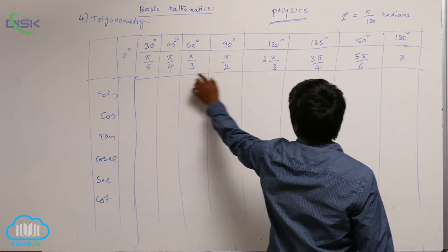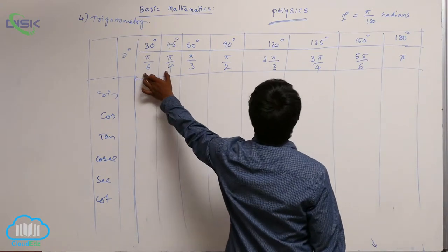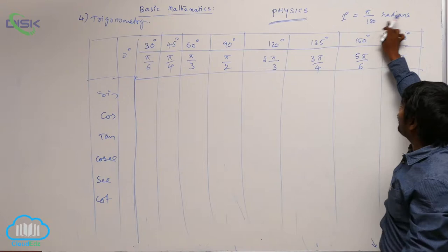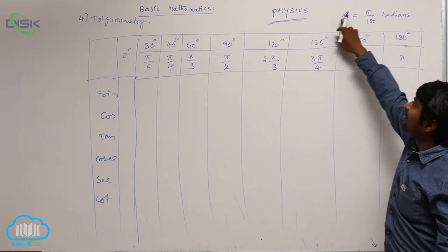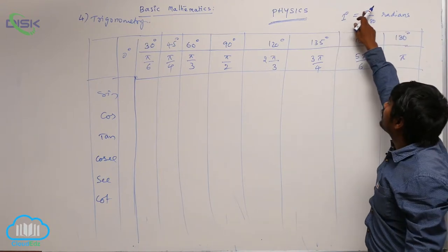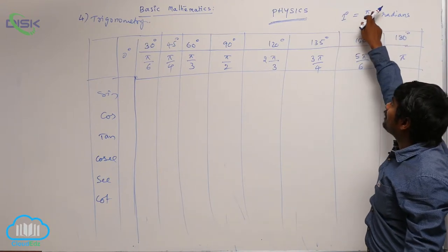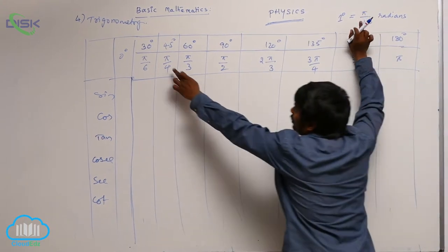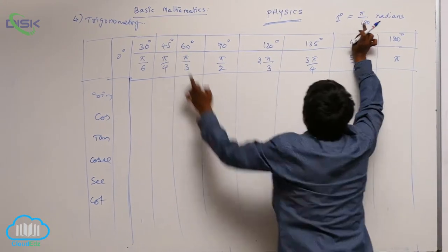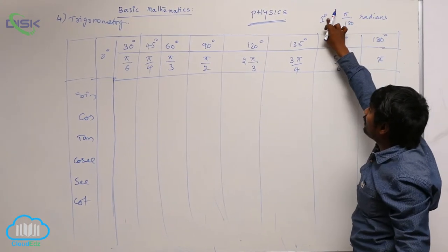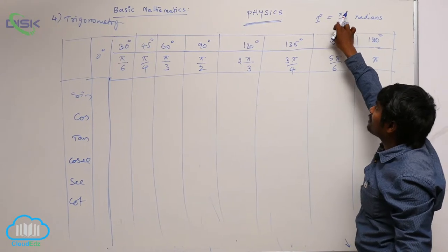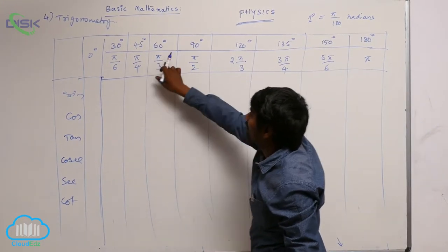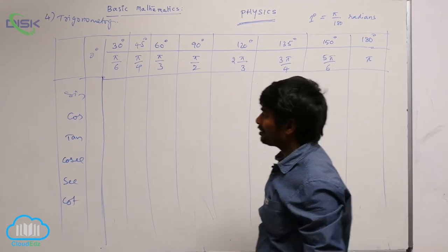Here I have written those angles in radians. Since 1 degree is equal to pi by 180 radians, multiply 30 by pi/180 to get pi by 6 radians. Multiply 45 by pi/180 to get pi by 4 radians. In the same way you can get all these values.